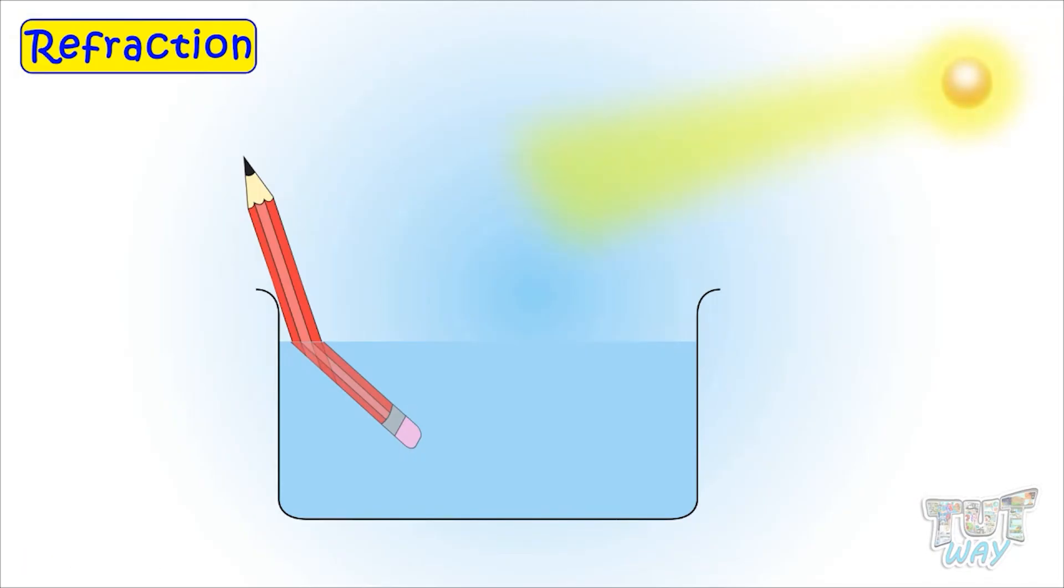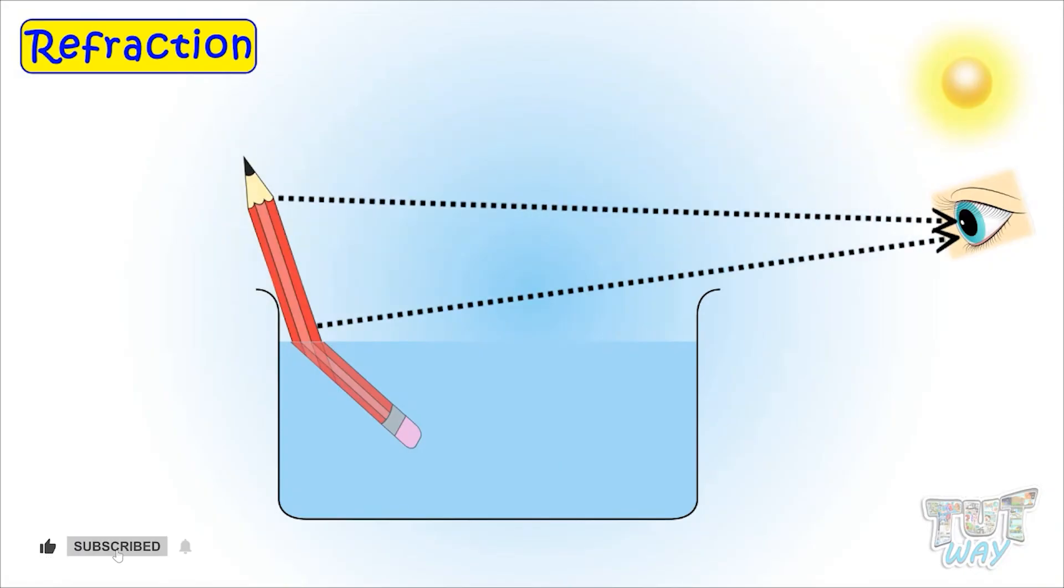We see everything because light falling on it gets reflected back to our eyes. But in the case of this pencil, the light falling on the half of the pencil which is not in the water is directly getting reflected back to our eyes without any bending. So we see that pencil straight.